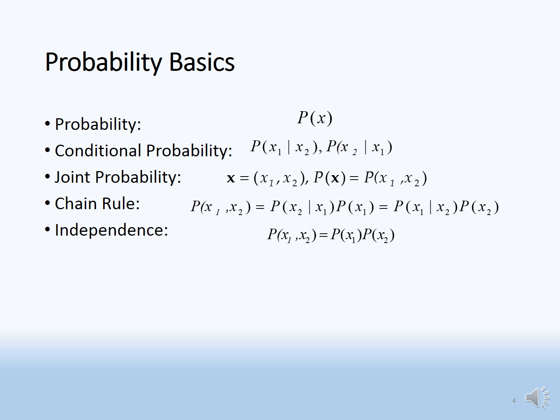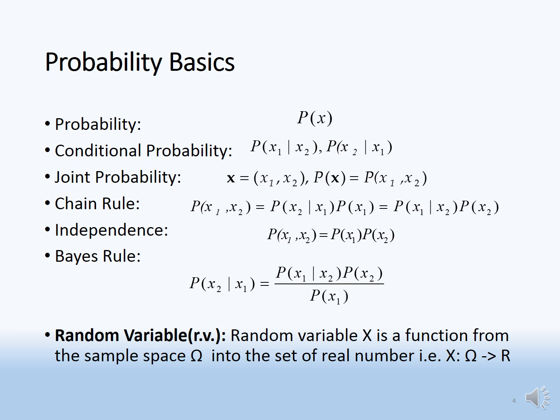Independence: the joint probability of x1 and x2 is given by probability of x1 times probability of x2 when both are independent. Bayes' rule: when P(x1 given x2) is known and we are interested in finding P(x2 given x1), we use Bayes' rule. The formula is shown here.